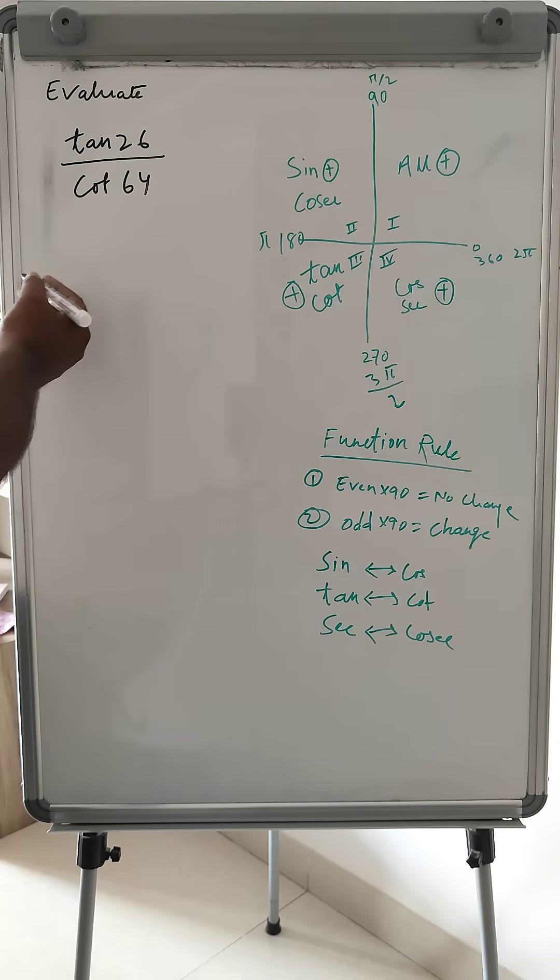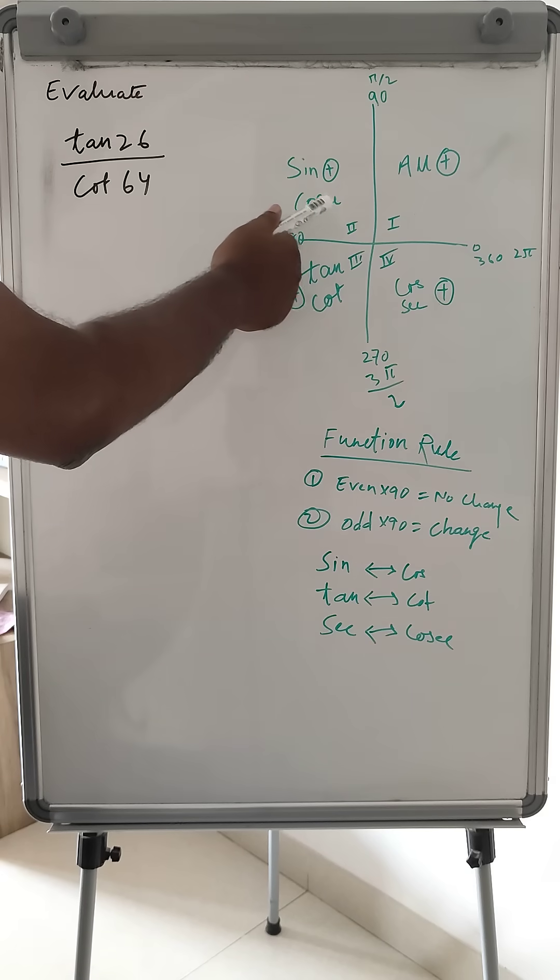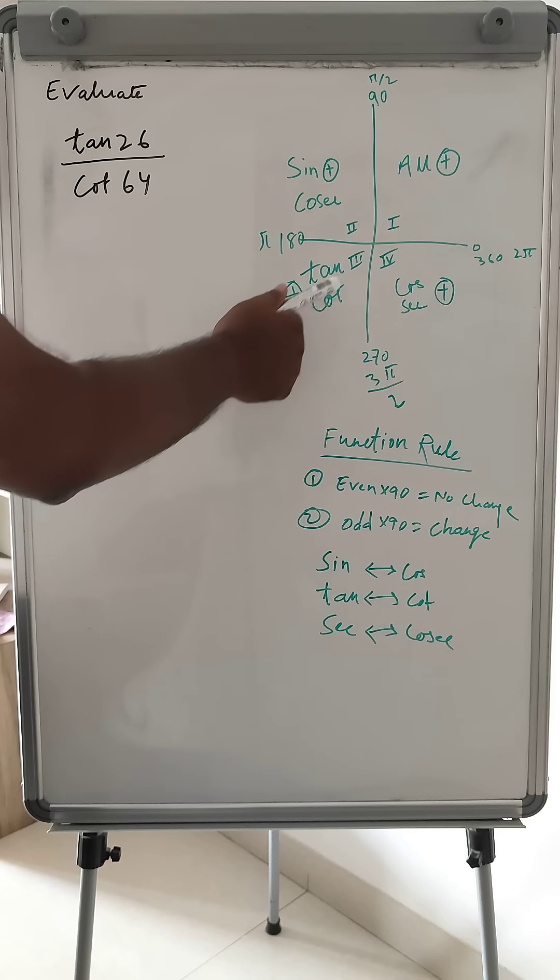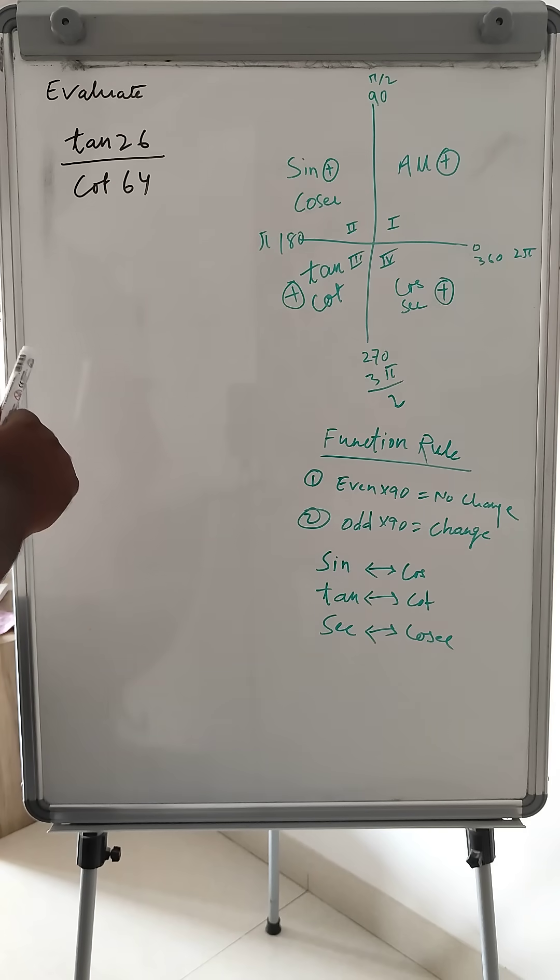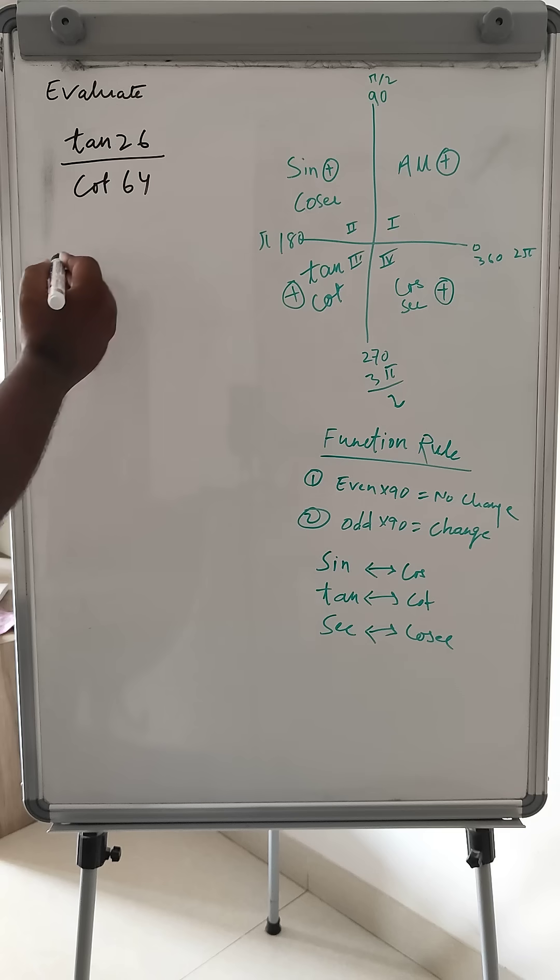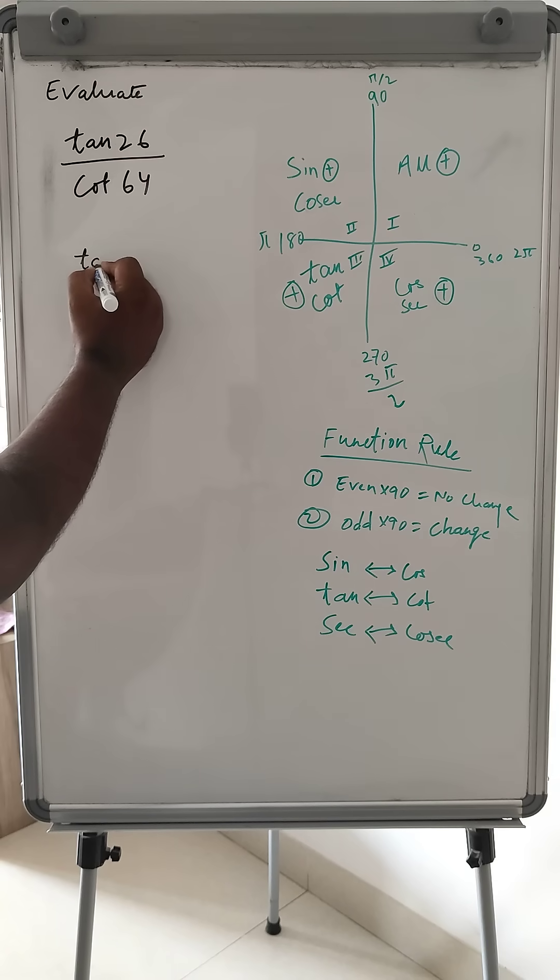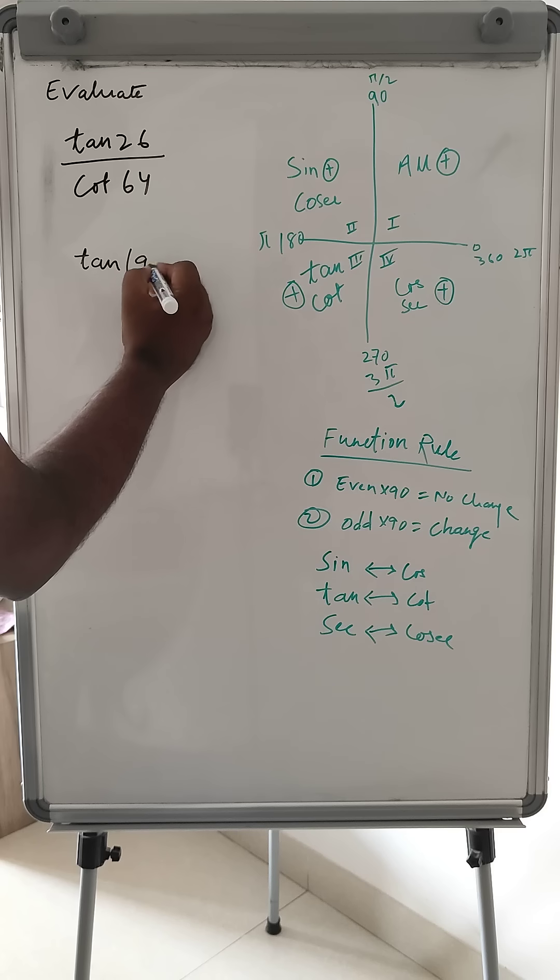In first quadrant all are positive, second quadrant sin and cosec are positive, third quadrant tan and cot are positive, and fourth quadrant cos and sec are positive. So we can write here tan like 90...